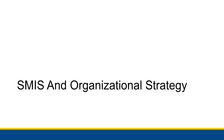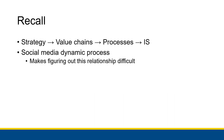In this video we're going to talk about how social media information systems can actually benefit an organizational strategy. In chapter two we talked about how organizational strategy helps determine the value chains of a company, which then helps determine the processes that actually generate the value, and those processes determine what information systems we need to implement in order to help us make value from our organization.